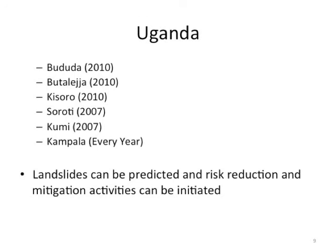As an example from Uganda, floods occurred in Bududa in 2010, Butaleja in 2010, Kisoro in 2010, Soroti in 2007, Kumi in 2007, and they occur in Kampala every year.